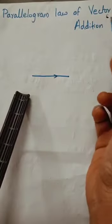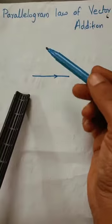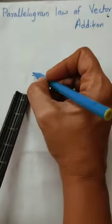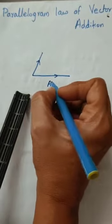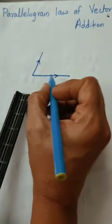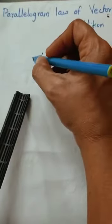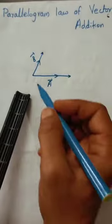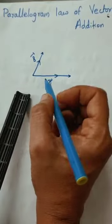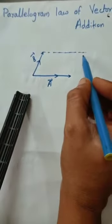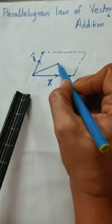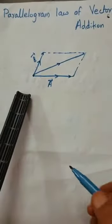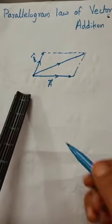We shall now discuss the parallelogram law of vector addition. According to this law, if two adjacent sides of a parallelogram represent two vectors in magnitude and direction, then the diagonal represents the vector sum of A and B. So this diagonal is A plus B.